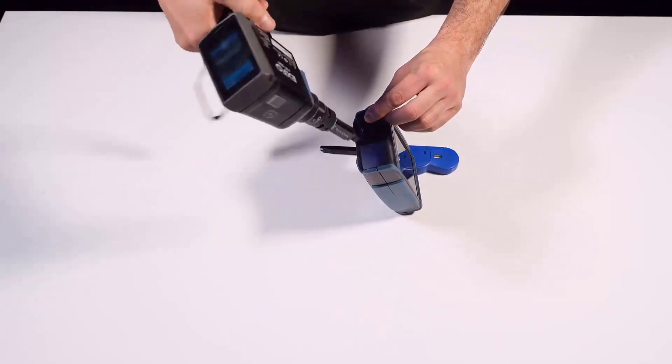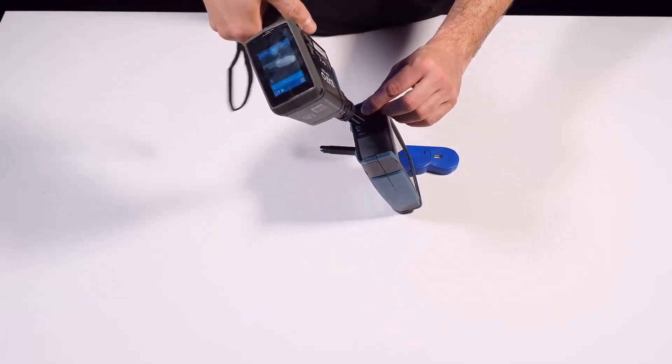Insert the inspection scope opposite to the alignment key and then you can perform the inspection of the connector.